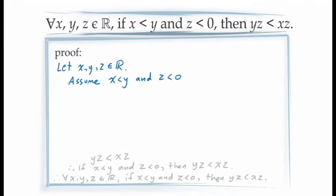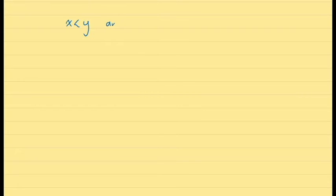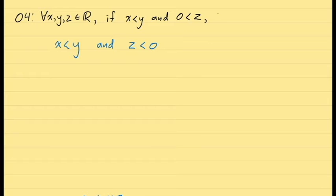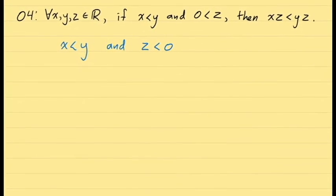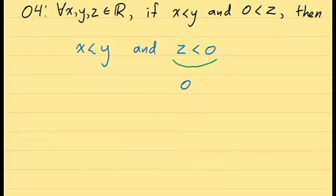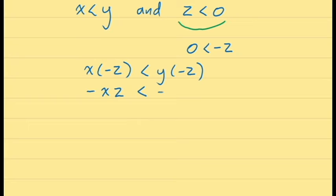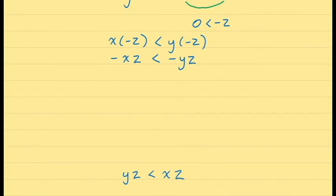To demonstrate the consequent, let's get out a scrap piece of paper. Since we've assumed x < y and z < 0, we can use these facts. Our goal is to prove yz < xz, which involves multiplication by z. The difficulty is that axiom O4 only allows multiplication by a positive number. However, we just proved that if z < 0, then -z > 0, so we can use this. Since -z > 0, axiom O4 lets us multiply both sides of the inequality by -z. Using proposition 2 — that x·(-z) = -(xz) and y·(-z) = -(yz) — we obtain the inequality -xz < -yz.